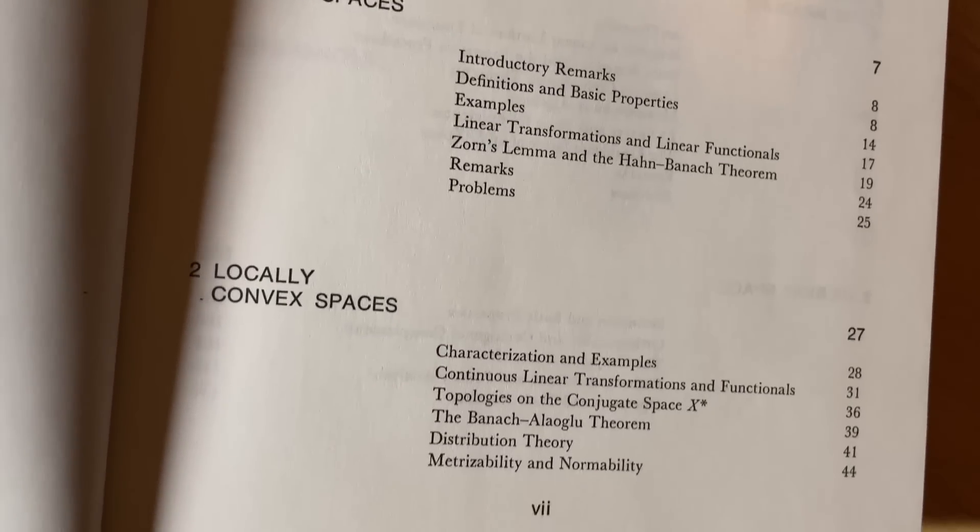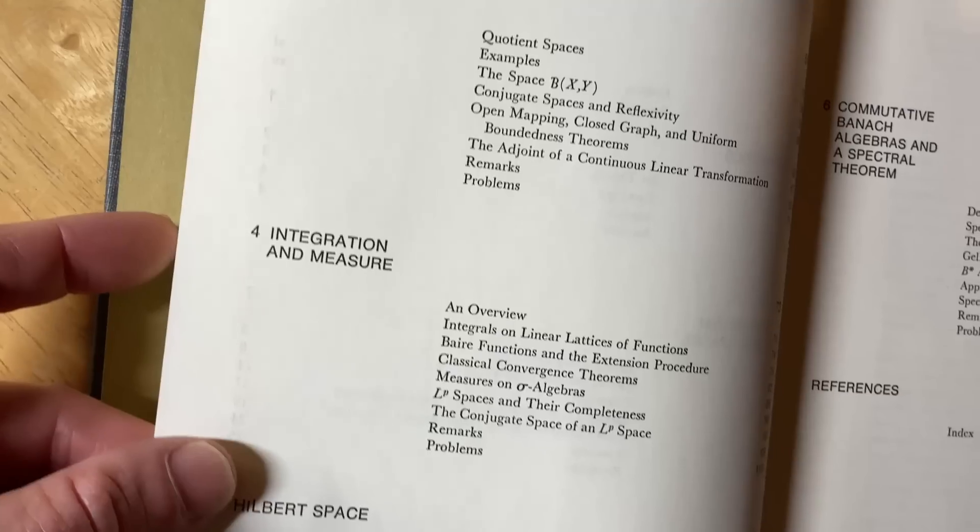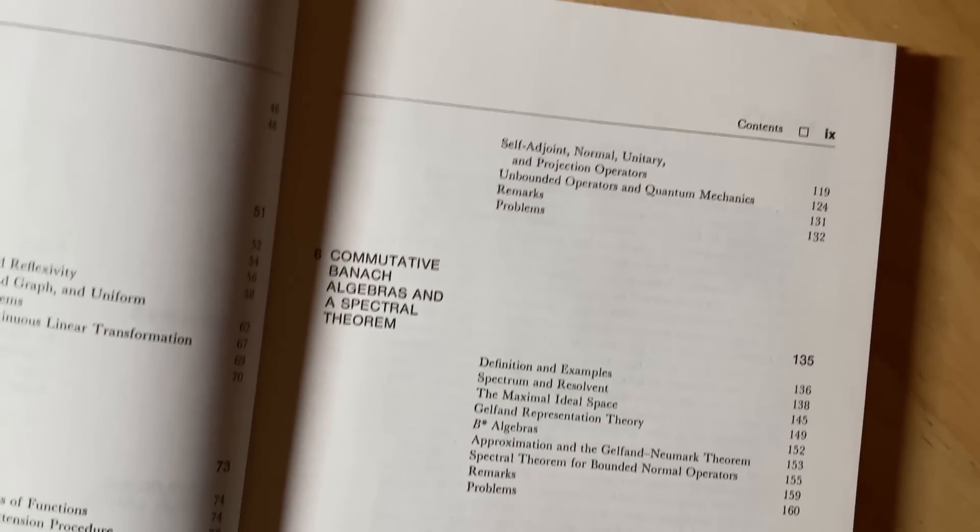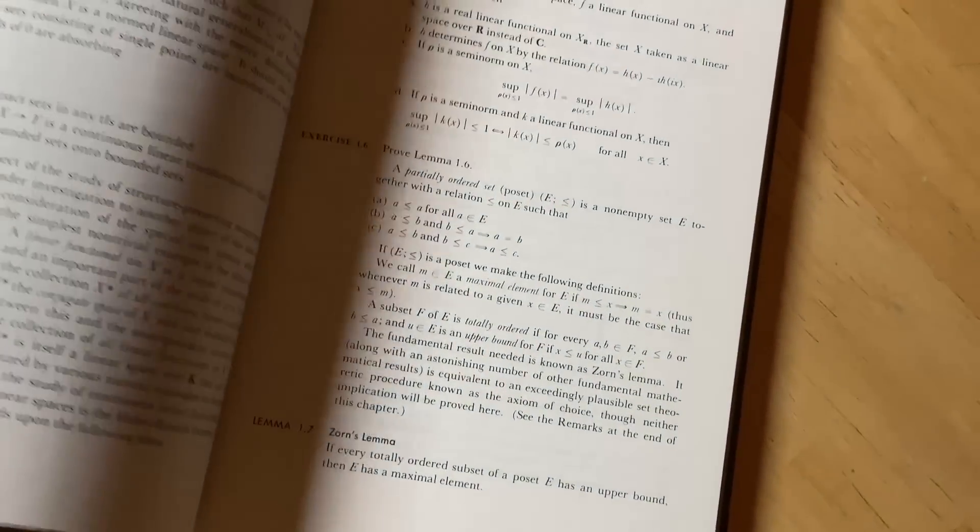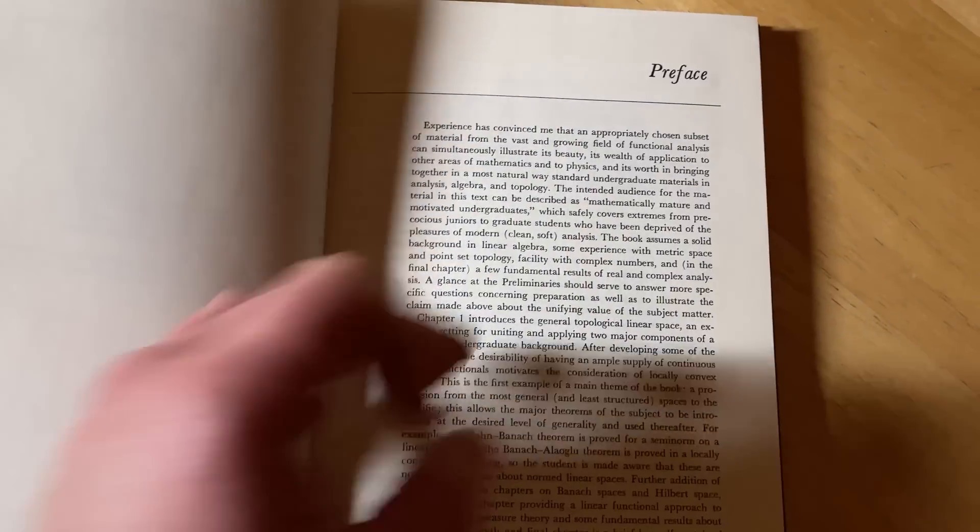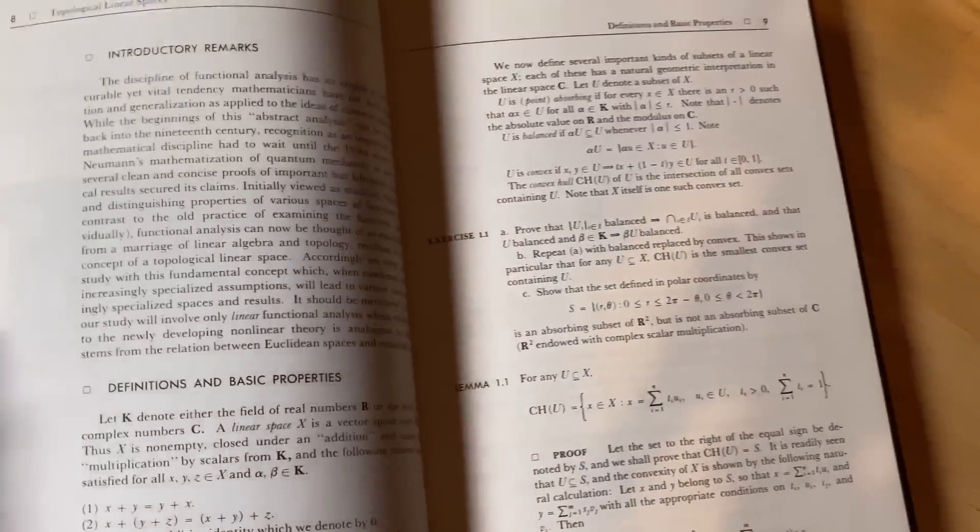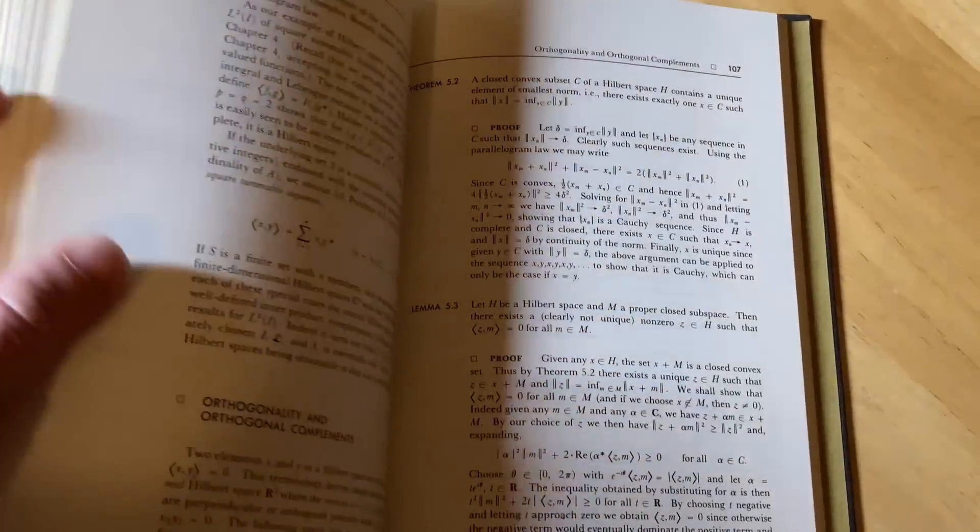Topological linear spaces, locally convex spaces, Banach spaces, integration and measure, Hilbert space, and then commutative Banach algebras and a spectral theorem. So this is something that you, again, would want to know a lot of math. You'd probably want to know some topology before jumping into this, some analysis. You know, you ideally want to be finishing up your math degree, so you want to know a ton of math, or you want to have a math degree already.